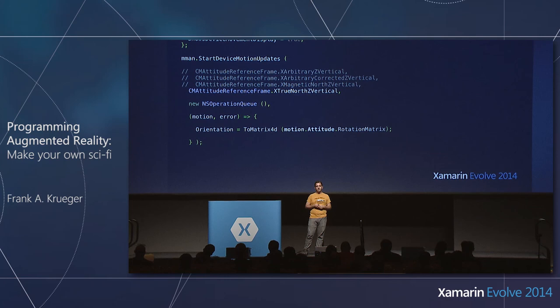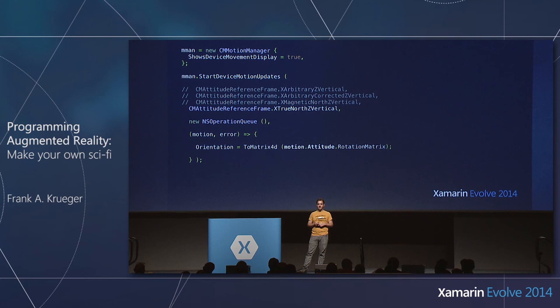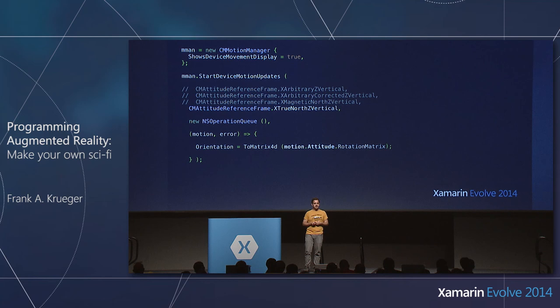Apple provides four different reference frames for orientation. There's x-arbitrary and x-arbitrary with corrections — we throw those away; we don't want arbitrary numbers in our code. They're there for power savings, doing the math and tricky hardware needed for a perfect reference frame, but just for toy demos.